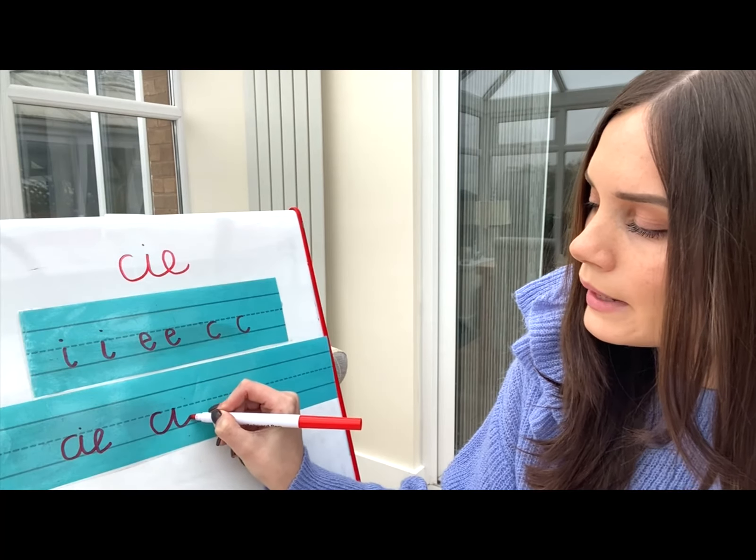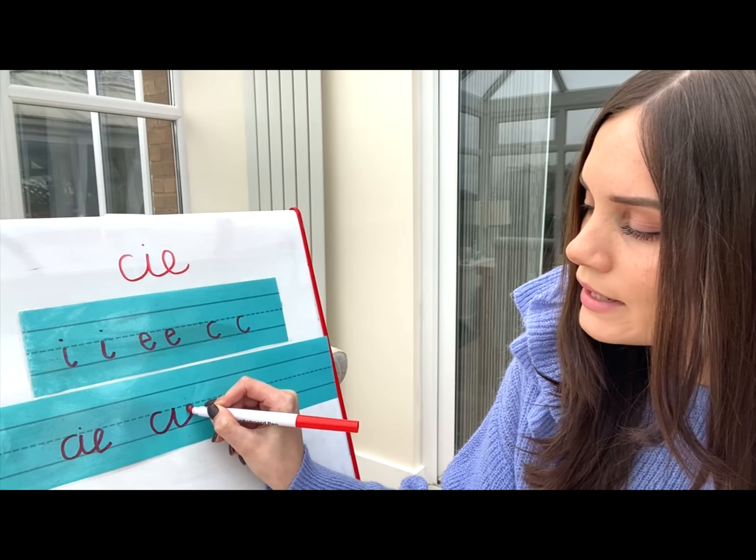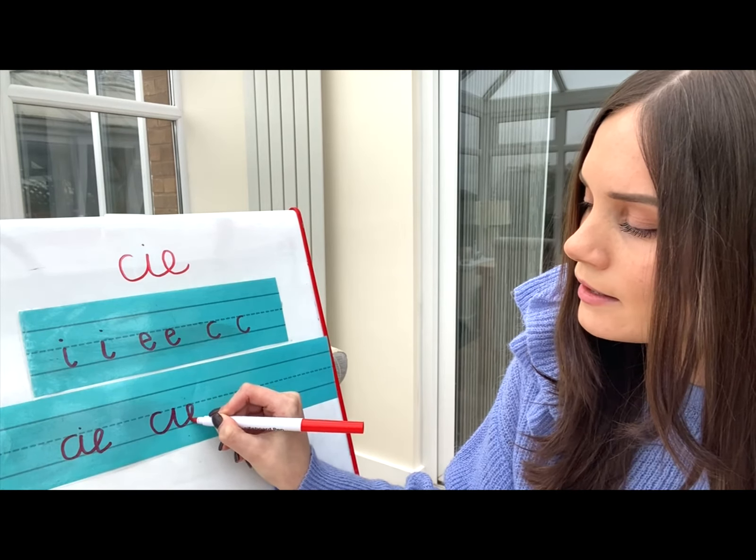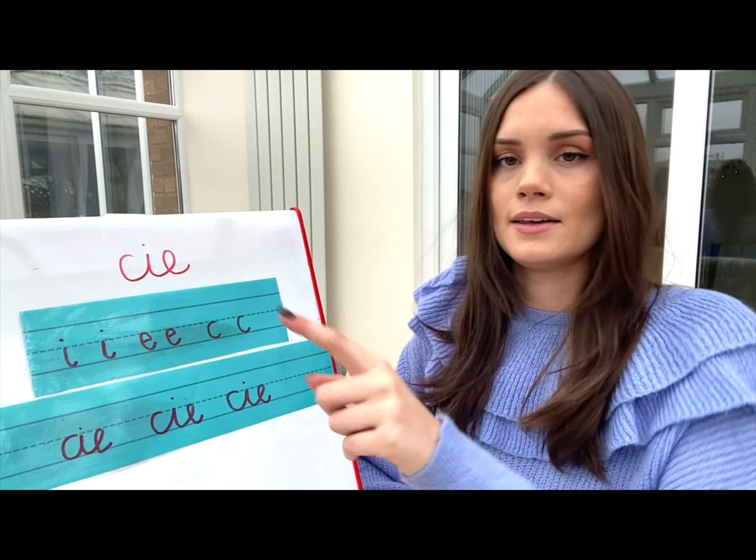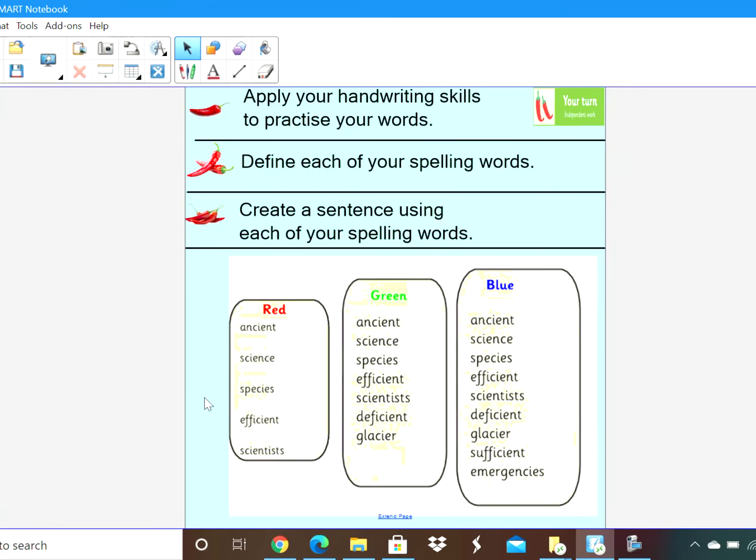So let's have a go together at joining C, I, E. We start from the middle — C, I, E. Let's have another go: C, up, down, back again to form your E, which we practised yesterday, and then dot the I. Let's have a go once more.